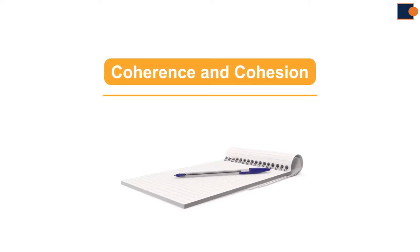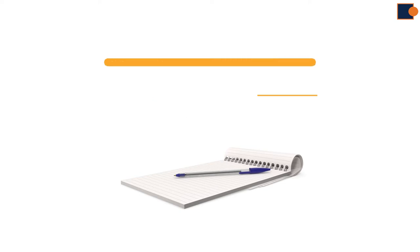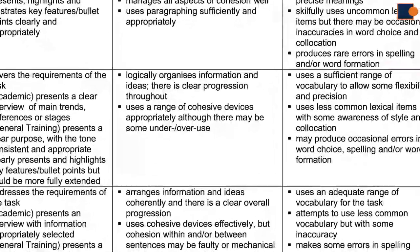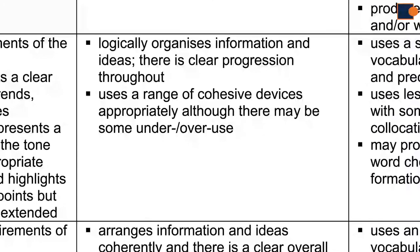This time we focus on coherence and cohesion to achieve band 7 or above by looking at the criteria of examiners. If we look at the band descriptor from the official criteria, we can see that two factors are crucial for getting a 7.